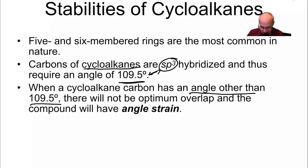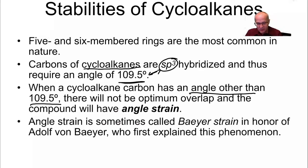Angle strain is also known as Baeyer strain in honor of Adolf von Baeyer who first explained this phenomenon. So he noticed it, he noticed what was going on and he described it for us. He must have called it angle strain and then other chemists more than likely gave it his name out of respect for his accomplishment or for his observation.